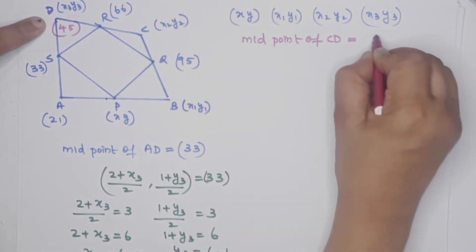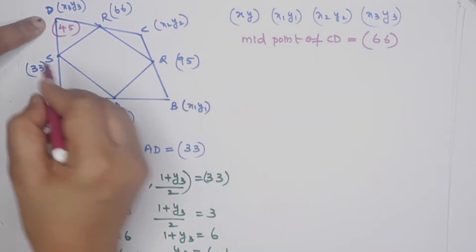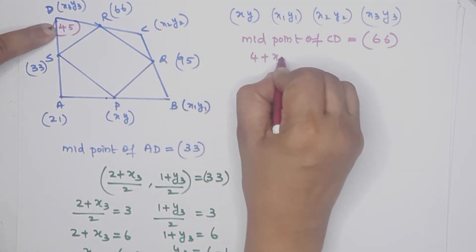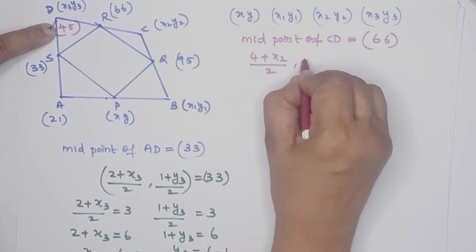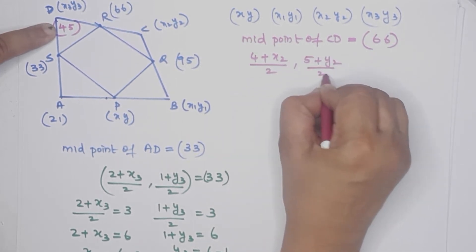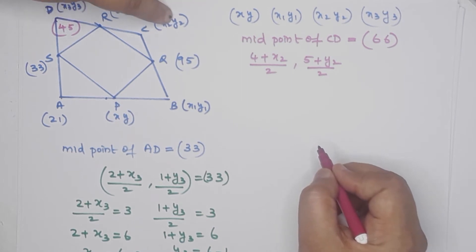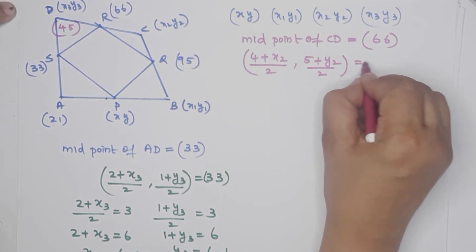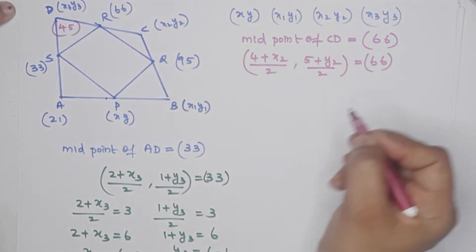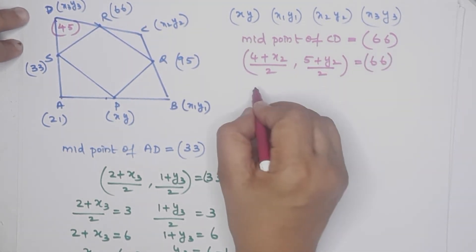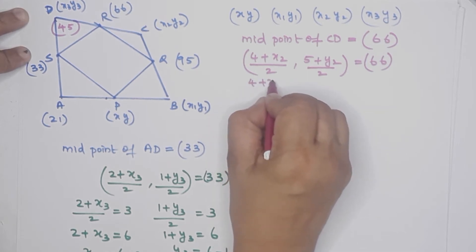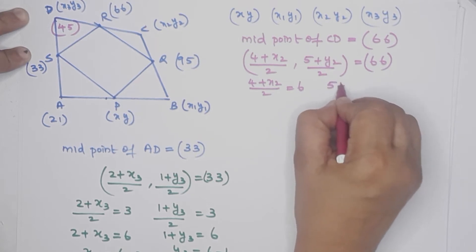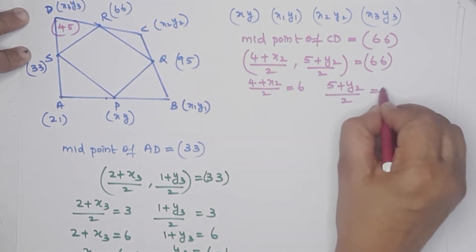Midpoint of CD equals (6, 6). Since D is at (4, 5), we write: (4 plus x2 over 2, 5 plus y2 over 2) equals (6, 6). So 4 plus x2 over 2 equals 6, and 5 plus y2 over 2 equals 6.